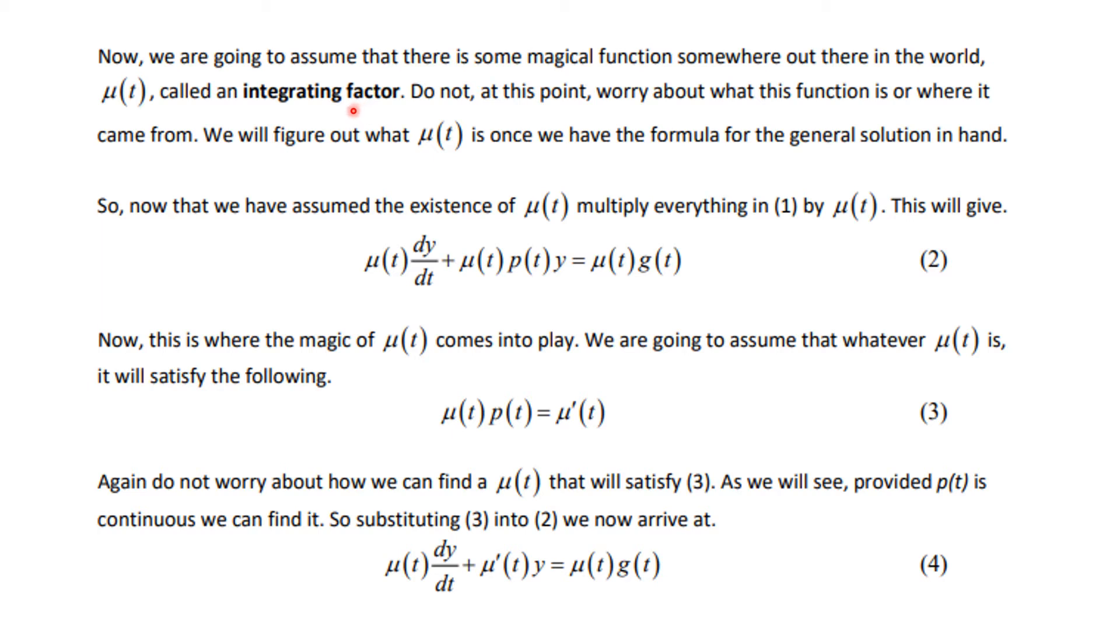So we'll say, okay, let's take this magic function, this mu of t, and multiply all the way through the standard form by this, and we get this kind of expression. And furthermore, we're going to insist that mu prime of t is equal to mu of t times p of t, so that is mu prime of t.